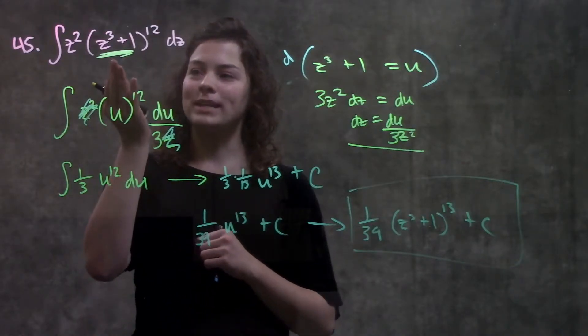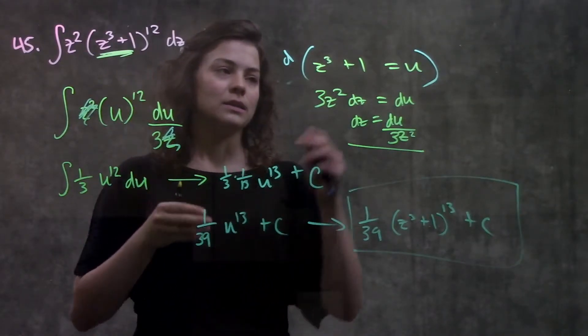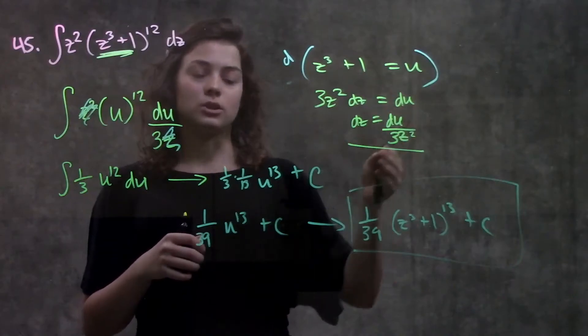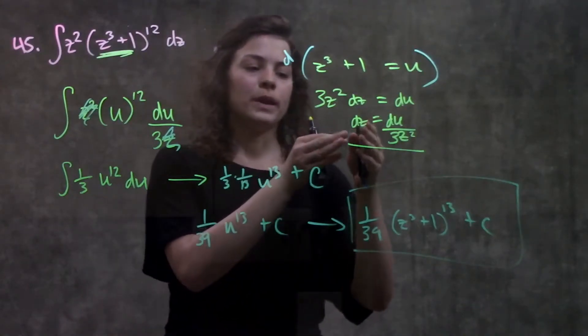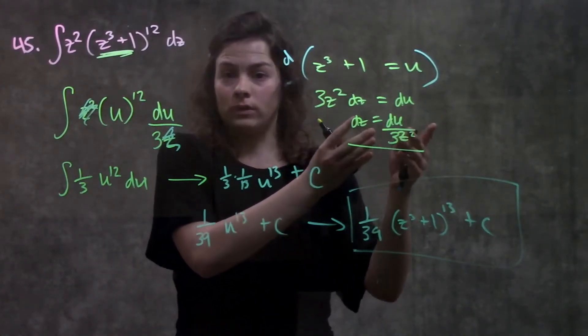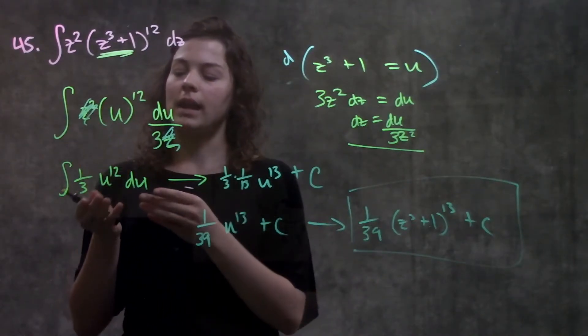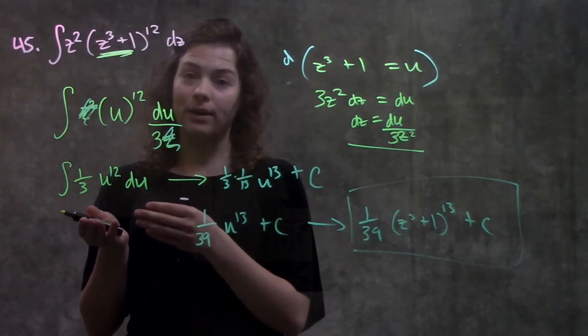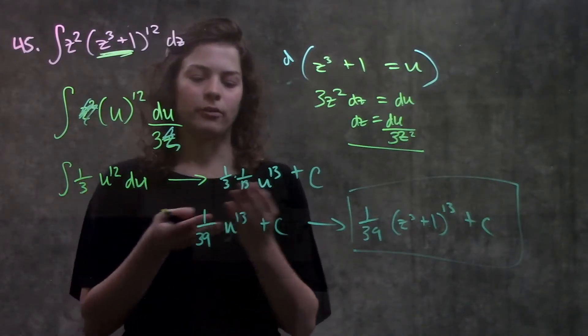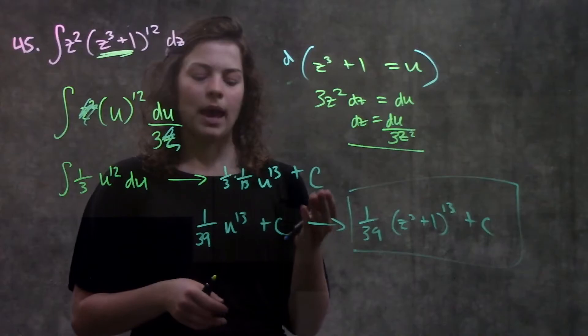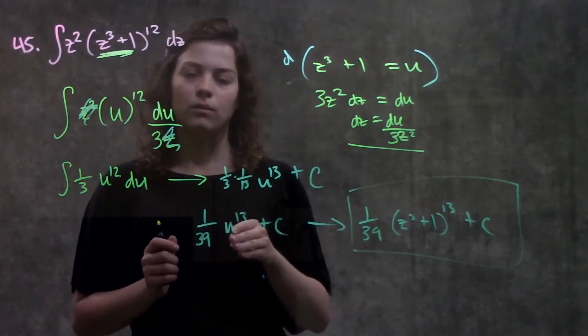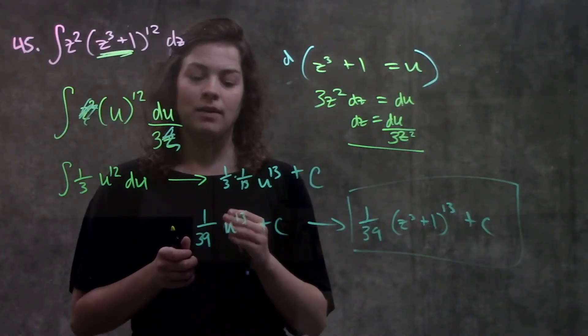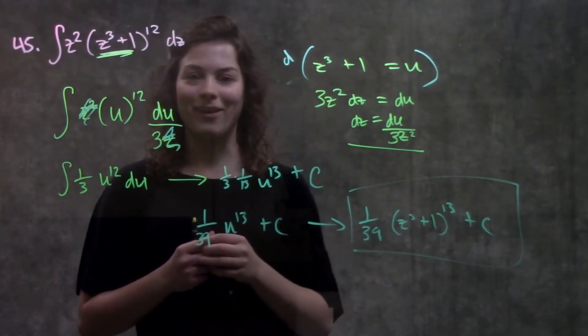So step 1 was we identified a function within a function to set equal to u. We took the derivative of both sides and replaced our dz with whatever it equaled to. So that now, things crossed out, and I have a function written in terms of only u. And I have a function where I know how to take the integral of it. So from there, I just took the integral like normal. And when I was done, I just plugged back in my z function that I set equal to u. And that was it.